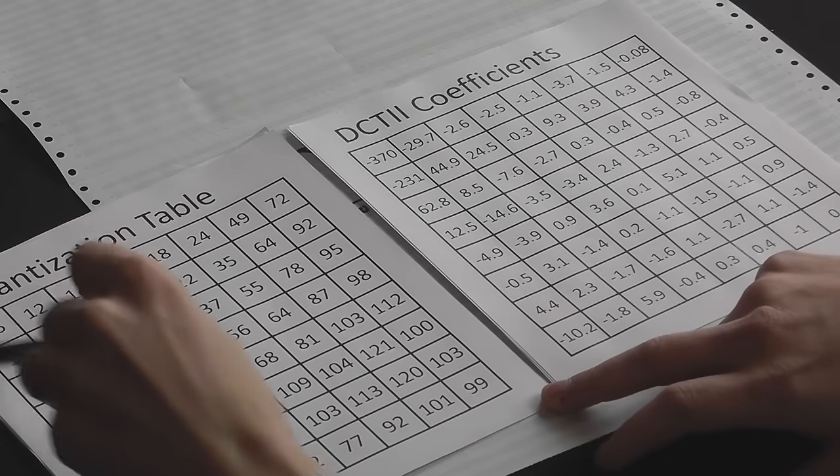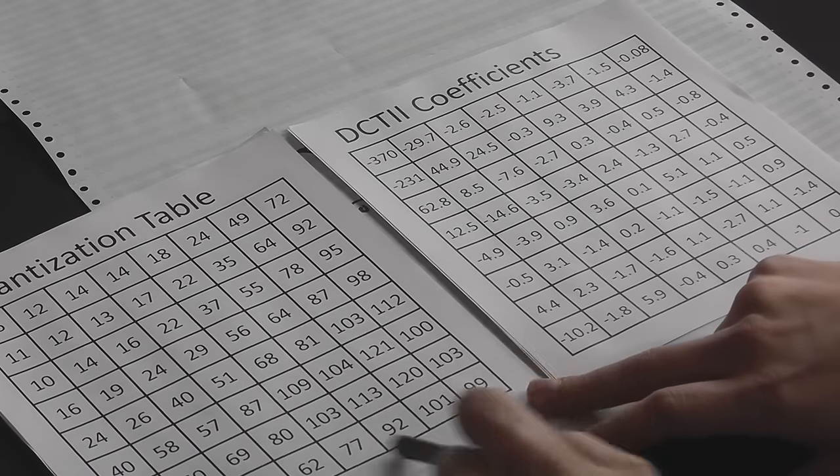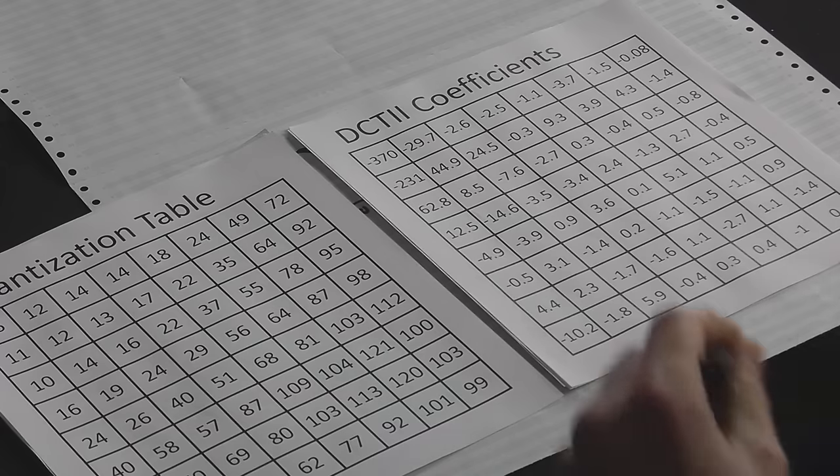And you can see already that these ones are much bigger than these ones. So what essentially happens is these get scaled by a huge amount, usually to close to zero, and then get removed by being set to zero when we round to the nearest integer. So for example, 370 divided by 16 is roughly 23, or minus 23.